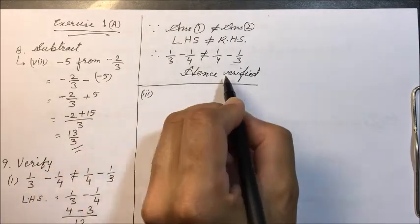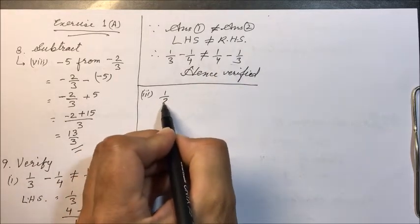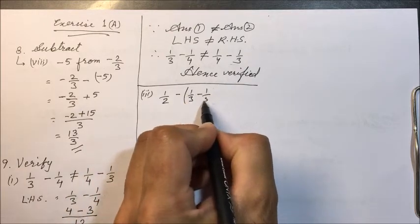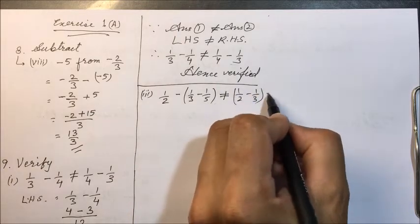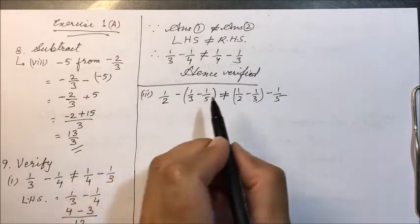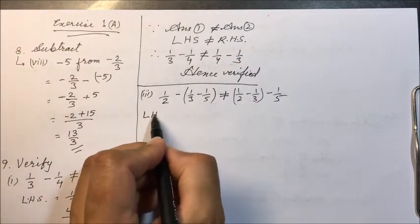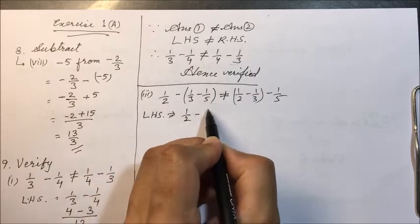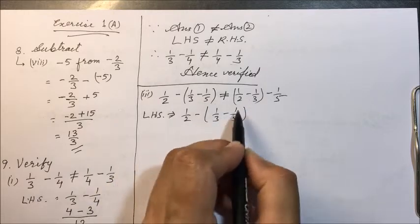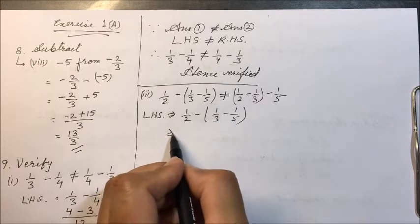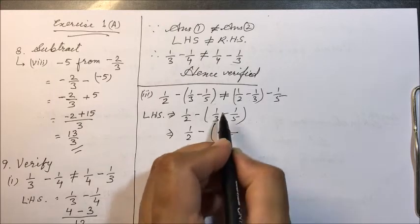Next, the third part of question nine: verify that subtraction is not associative. We verify: 1/2 minus (1/3 minus 1/5) is not equal to (1/2 minus 1/3) minus 1/5. Taking the left hand side, we first solve inside the bracket: 1/3 minus 1/5, taking LCM as 15, gives 5 minus 3, which is 2 upon 15.